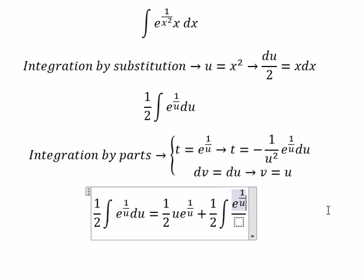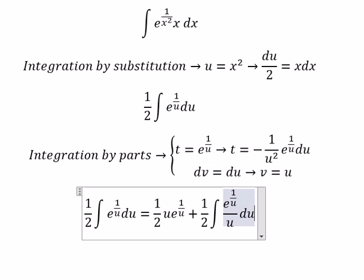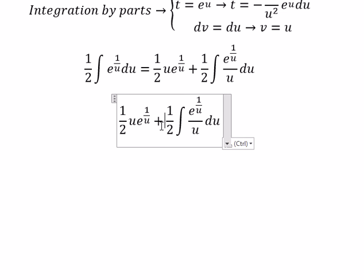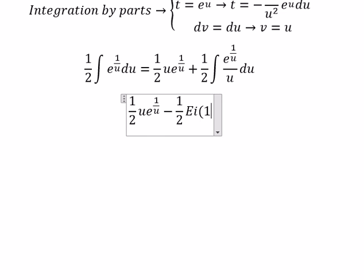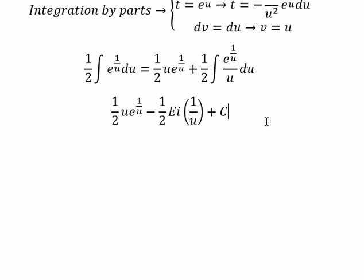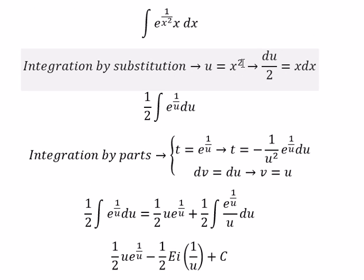And we have u in here. So the expression is e to the power of 1 over u, with u and 1 over u terms, and we add the constant C. The final answer in terms of u should be e to the power of 1 over u.